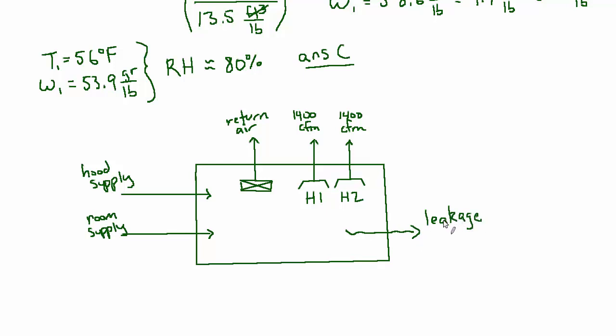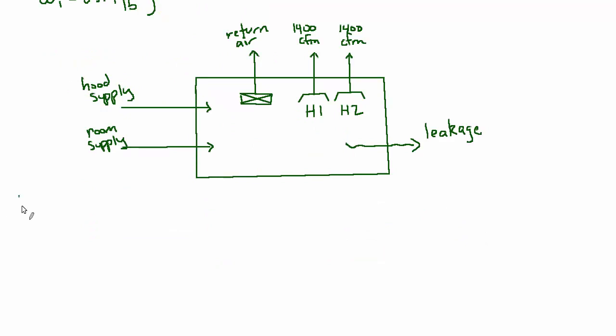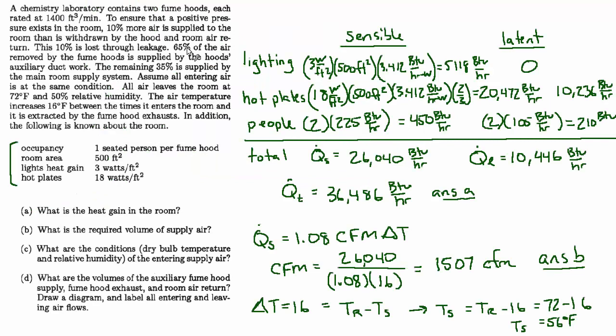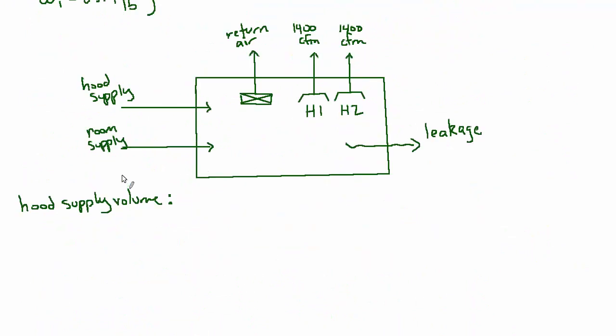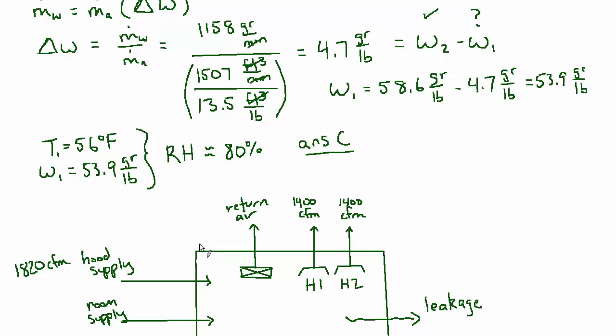Let's find out what some of these other values are and start with the hood supply volume. They told us that 65% of the air removed by the fume hoods is supplied by the hood's auxiliary ductwork. How much air is removed by the fume hoods? Well, it's 1400 CFM each, so 2800 CFM total, and 65% of that is coming from the hood supply ductwork. That's 2 times 1400 times 0.65, which equals 1820 CFM coming from the hood supply.